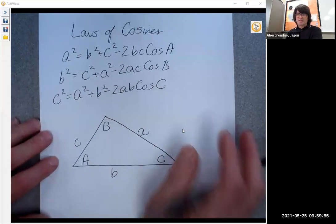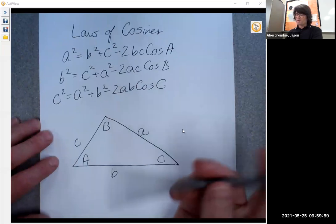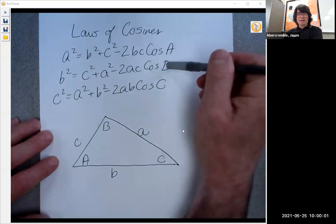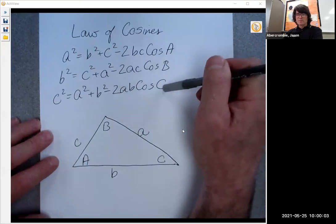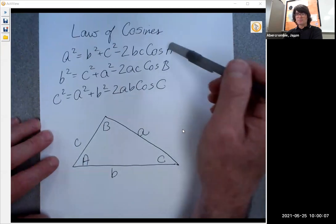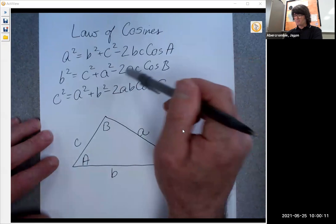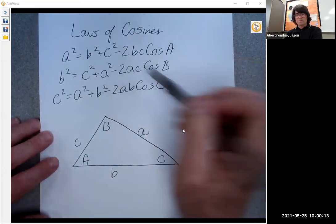The way you decide which formula or which version of this formula you use is by noting what angle you either have or you want. If I have one angle and two sides, say I have angle B, then I would use this guy and put in my sides and my angle and get whatever else I want.